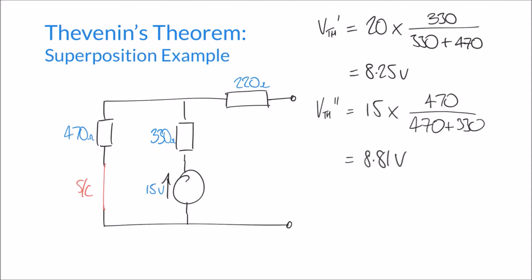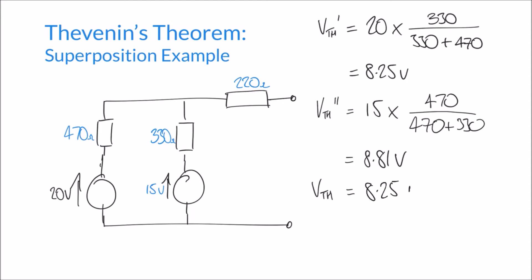Finally, remembering that we removed one power supply at a time, we return to the original circuit with both power supplies present. By superposition, our total Thevenin voltage is the sum of both individual results: VTH = 8.25 + 8.81 = 17.06 volts. That is our total Thevenin voltage.